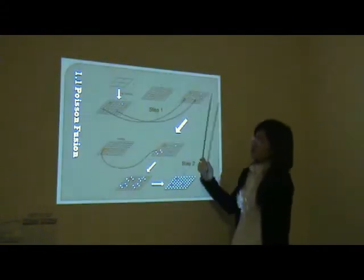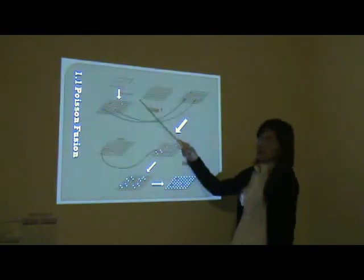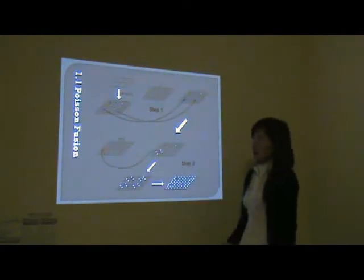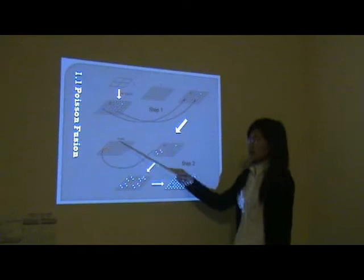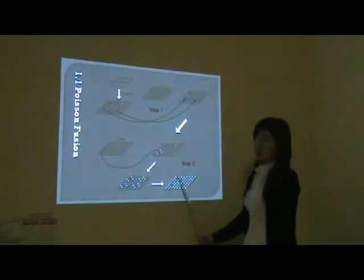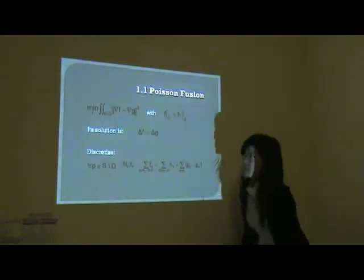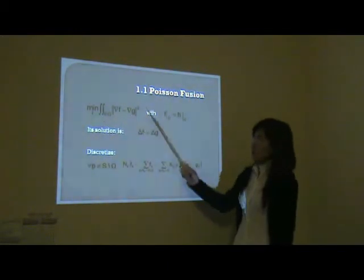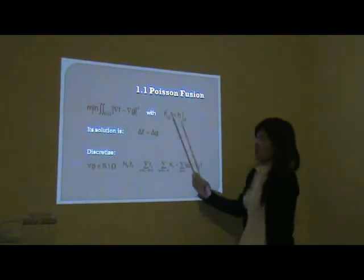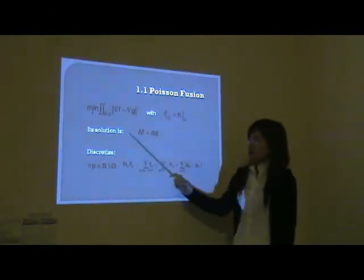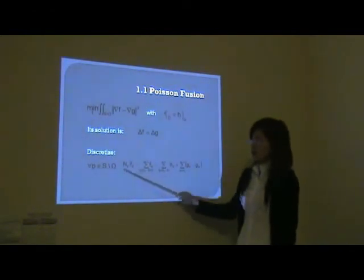First, Poisson Fusion. How to do it? First, downsample the multispectral image as hard boundary conditions. Then, interpolate the objective image under the gradient guidance of the panchromatic image. At last, we can achieve the objective image. It can be formulated as a minimization problem with hard boundary conditions, and its solution is the Poisson equation. We can discretize it and solve these linear equations.